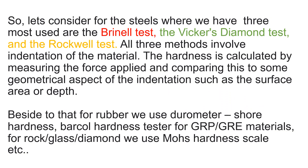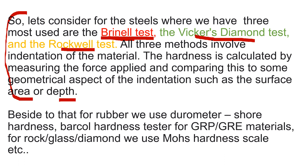For steel, the three most commonly used hardness tests are: Brinell (BHN), Vickers Diamond, and Rockwell. Brinell is the most popular because its range is higher — from 100 BHN to 650 BHN. All three methods involve indenting the material; hardness is calculated by measuring the force applied and comparing it to geometrical aspects of the indent such as surface area or depth.